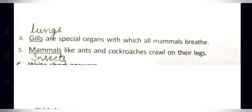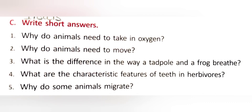Statement five: Normals like ants and cockroaches crawl on their legs. The word 'normals' is incorrect — it should be 'insects.' Correct statement: Insects like ants and cockroaches crawl on their legs.